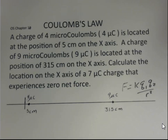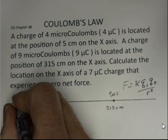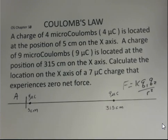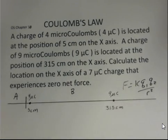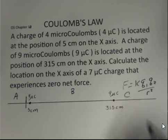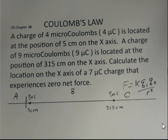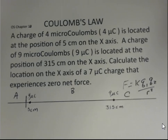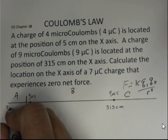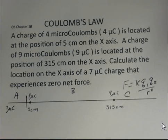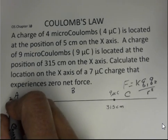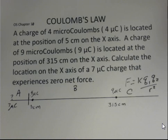So, where should we place this third charge? I'm going to label region A to the left of the 4 microcoulombs charge, B in between the two charges, and C to the right of the 9 microcoulombs charge. If I place the 7 microcoulombs charge out in region A, can I have a situation where the net force is 0? The answer is no.